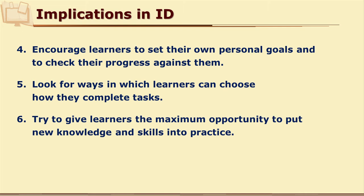For example, instead of providing many software training modules one by one and giving specific tasks to complete in a particular manner, why not first give them a problem? Let them solve the problem by their own ideas. Support material can be provided and learners can be told to access that material whenever and in whatever way it is needed. This establishes that we trust them — we give them choice in completing the task while also providing learning material they can access as per their choice.